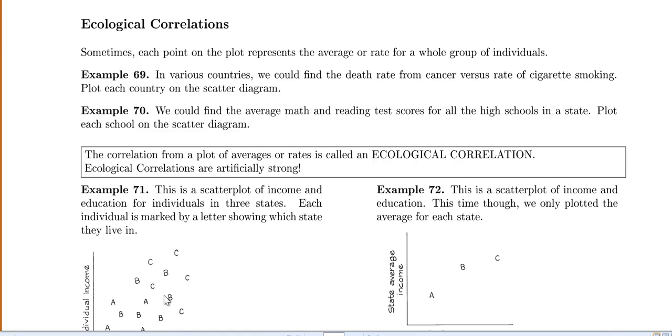Next, ecological correlations. So this is something you have to watch out for. So sometimes each point on a plot represents the average or a rate for a whole group of individuals. So one point represents a whole group of people instead of just being one person.